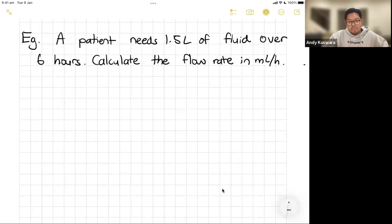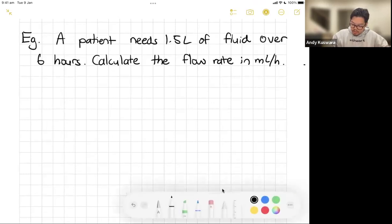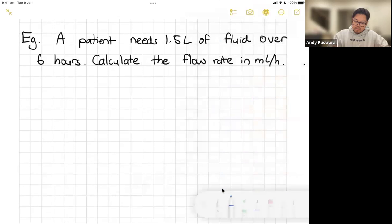The patient needs 1.5 liters of fluid over six hours. Calculate the flow rate in mL per hour. Okay, so simply the way that I deal with most rate questions is write it as a rate. So far I need 1.5 liters over six hours.